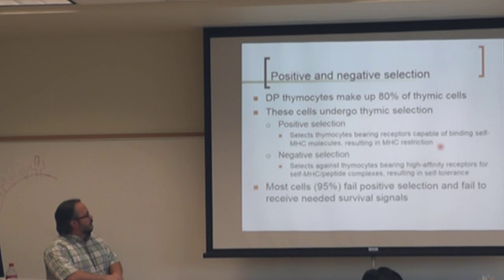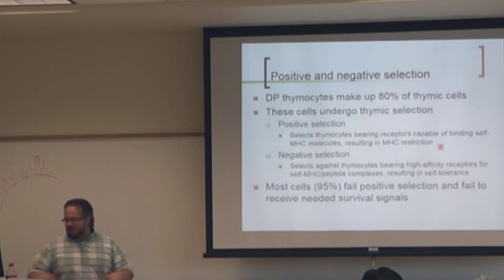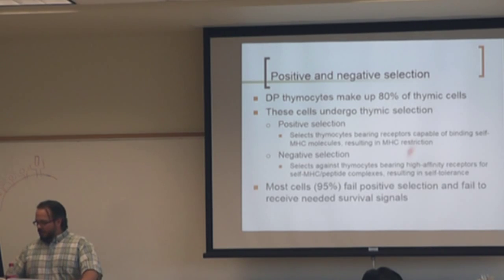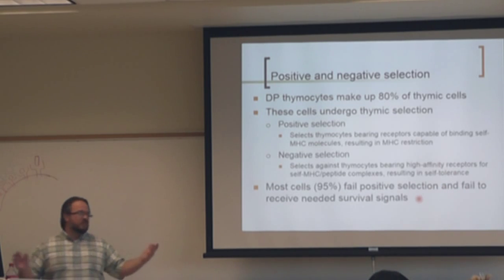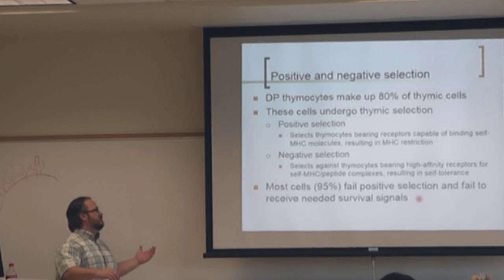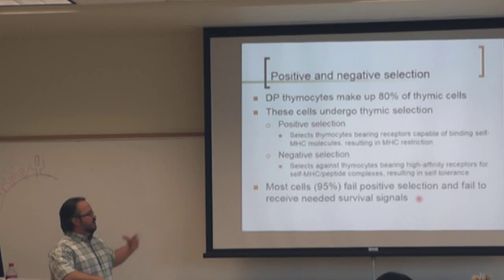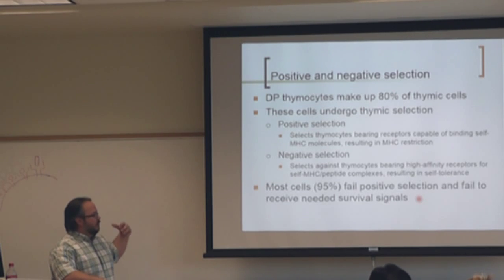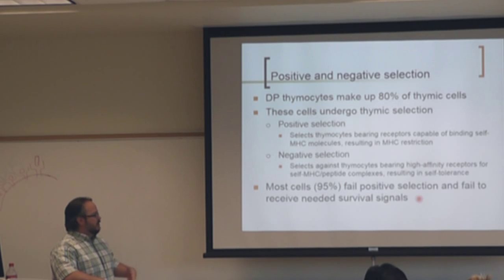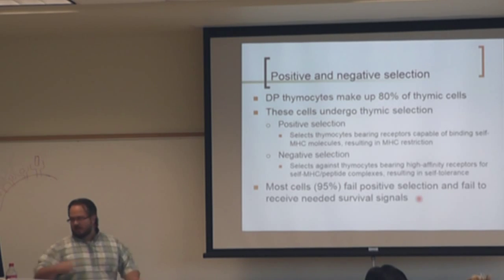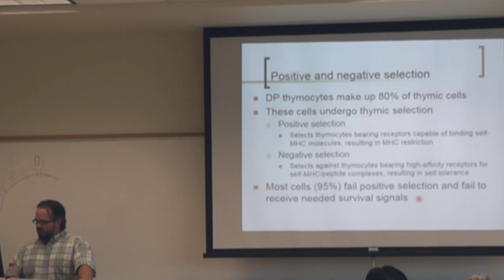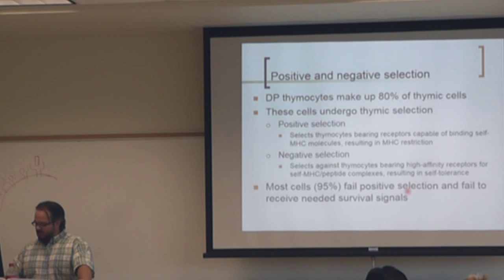Double positive thymocytes make up about 80% of thymic cells — so the majority of cells in the thymus are double positive. That's where they spend the most time. This is where they undergo positive selection for thymocytes that have some specificity for self-MHC molecules. Negative selection selects against thymocytes that have high affinity for self-MHC complexes. The great majority of T cells, as they develop, are going to be deleted — undergo apoptosis and be removed by macrophages. So we spend a lot of effort just trying to make T cells.